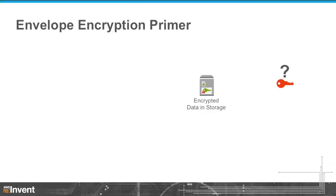However, we still have another problem, which is the key encrypting key. So what are we going to do with it? Well, let's encrypt it. Use a blue key. We've got green keys, we've got red keys, we have a blue key. That seems like a pretty good solution. We could then store that encrypted key in with the original data key. But we've got a blue key now — we'll wrap that again with an orange key. And so on and so on.